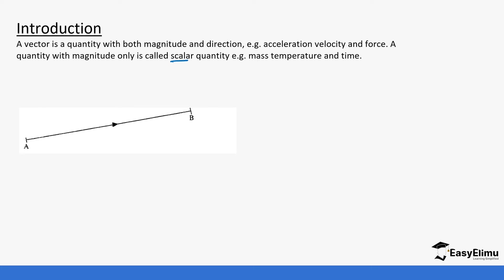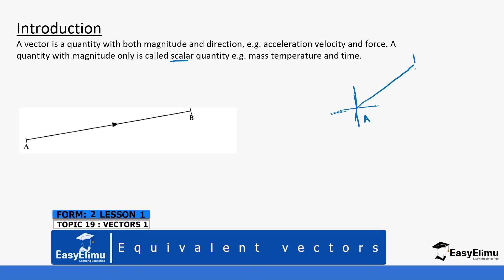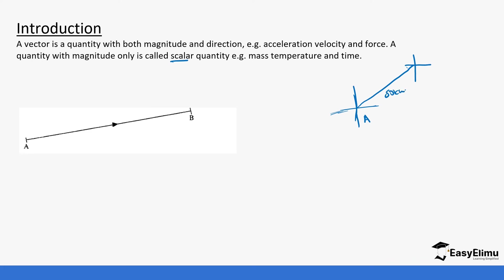Let's take an example. We talked about locating towns using bearings. For example, if you have town A that is 50 kilometers away from town B, and we only say that the distance between town A and town B is 50 kilometers, then the quantity we are talking about is magnitude. But if we go ahead and say that B is north east of town A, and the distance is 50 kilometers, we now have the direction.